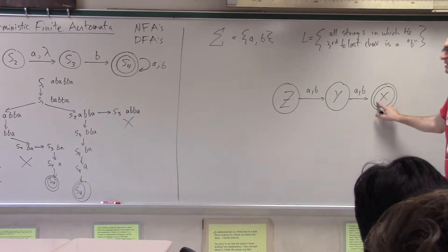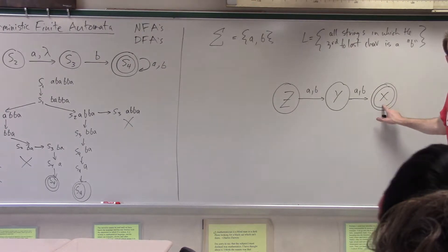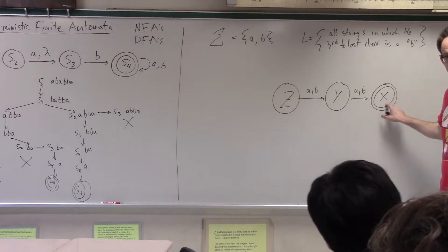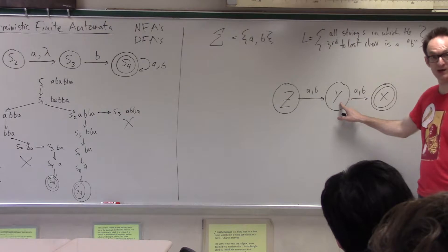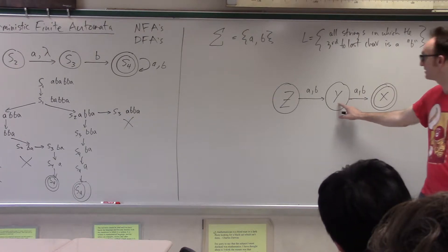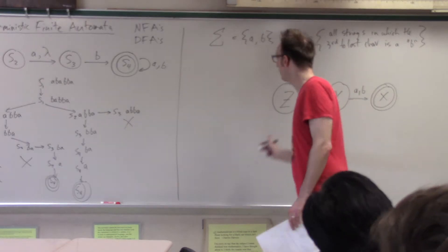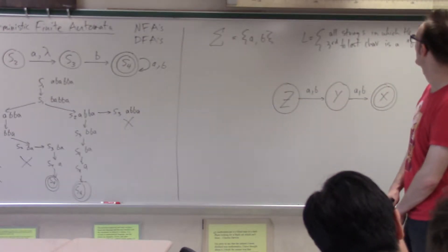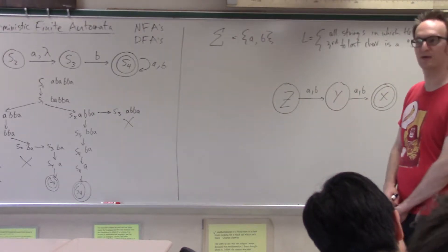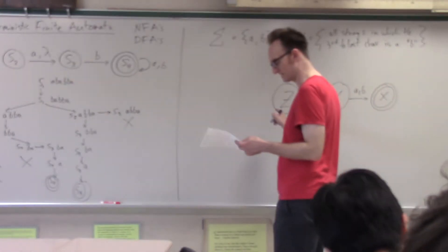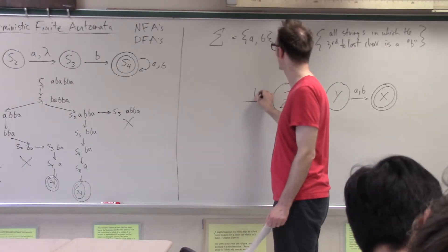So X is the state of I just finished my string and I'm done now. Y is the state of I have one character left, right? Z is the state of I have two characters left. All right, but the whole point of this language is that the third to last character had to be a B, right? So I think this one has to be a B. I needed a B to get here.